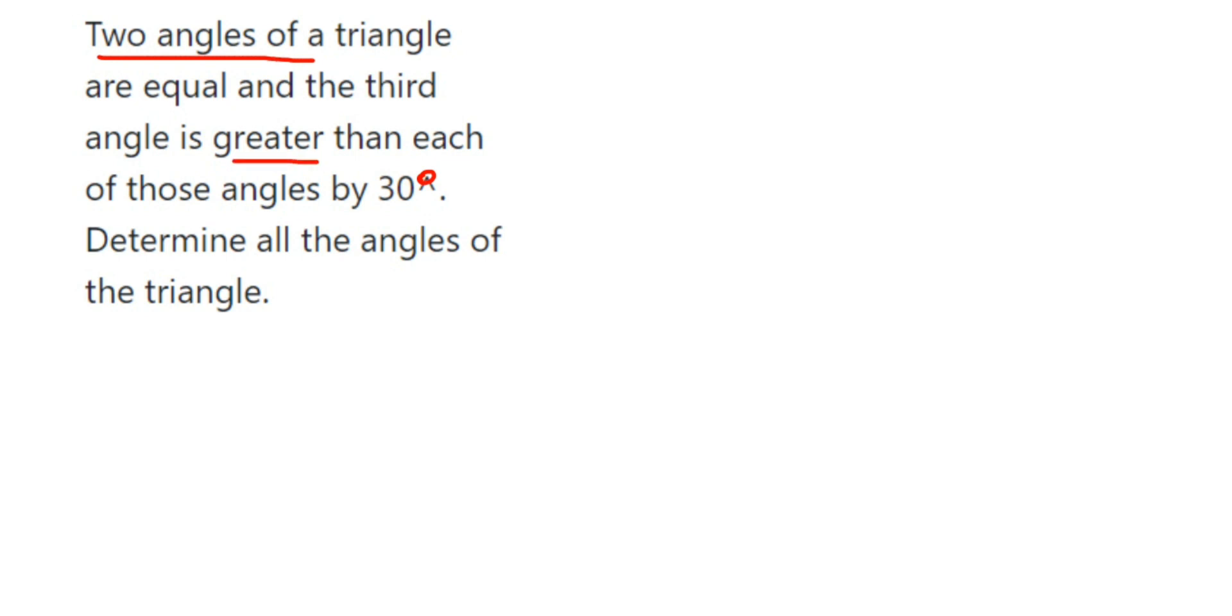Since the other two are equal, we're going to assume a variable here, like a or b, or you can take even x. So let us assume the angles first. Let two angles be x, that is the angles which are equal.